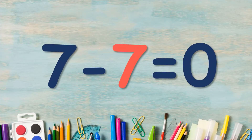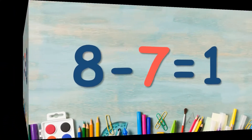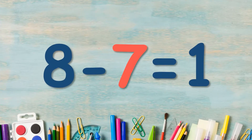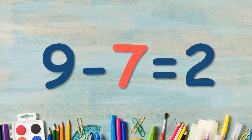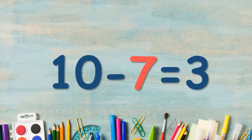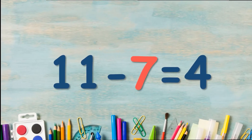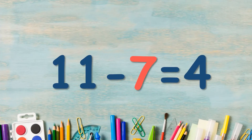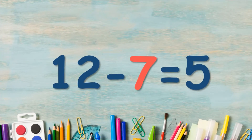7 minus 7 is equal to 0. 8 minus 7 is equal to 1. 9 minus 7 is equal to 2. 10 minus 7 is equal to 3. 11 minus 7 is equal to 4. 12 minus 7 is equal to 5.